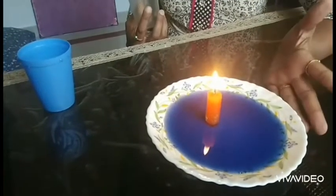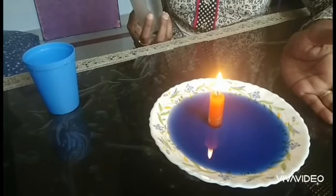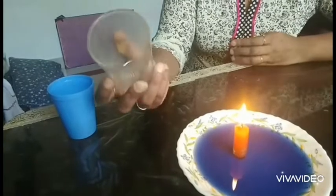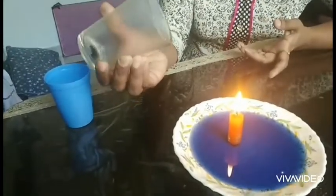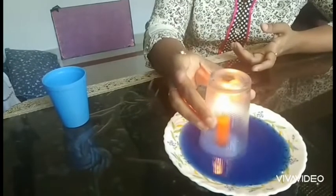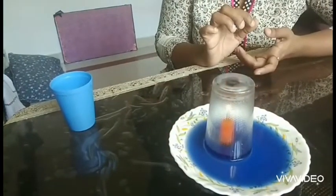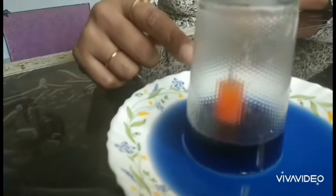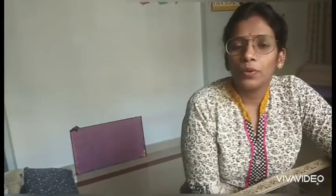This is the initial setup of the experiment. Now what you have to do is take the transparent glass and close the candle with it like this. You can see that the candle is put out and the level of water in the glass has risen to a certain level.